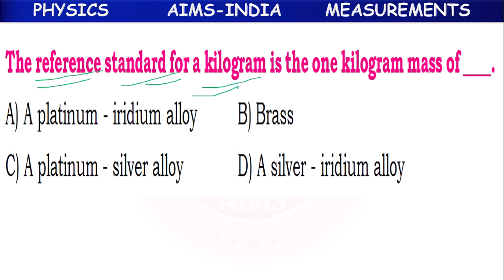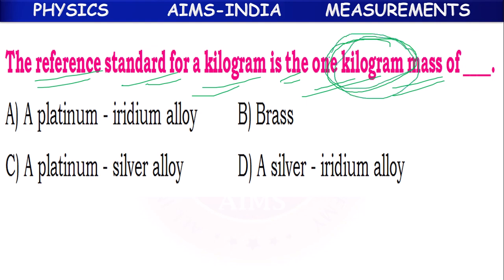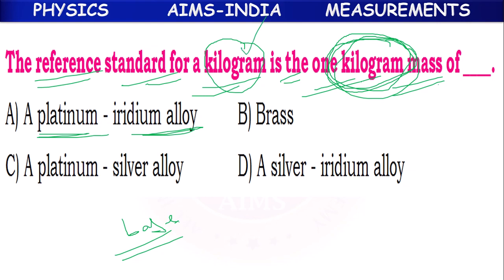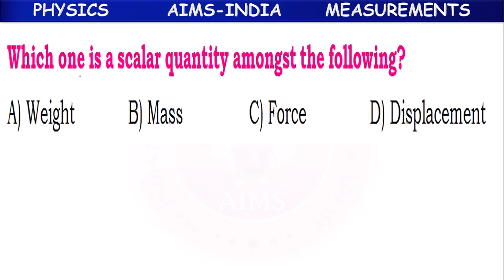The reference standard for kilogram is the mass of a platinum-iridium alloy. Scientists defined kilogram based on the mass of 1 kg of platinum-iridium alloy — option A. Which one is a scalar quantity? Mass is a scalar quantity — option B.